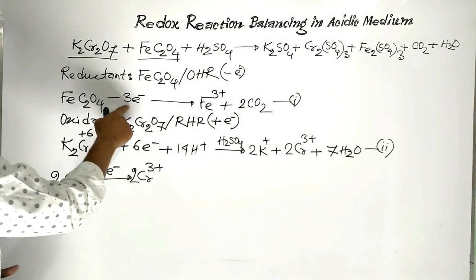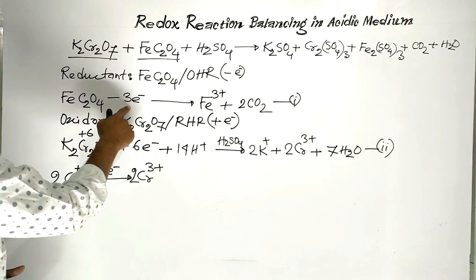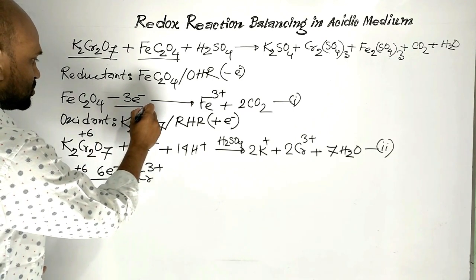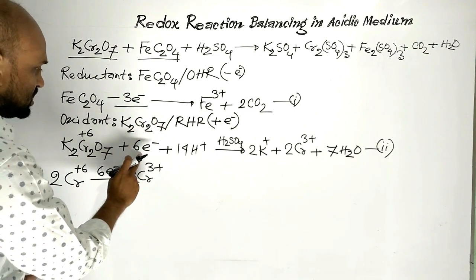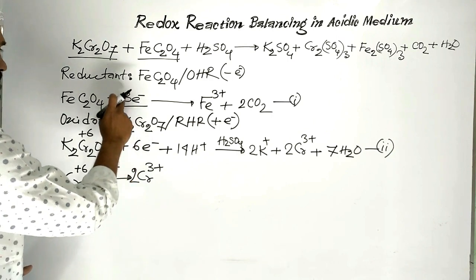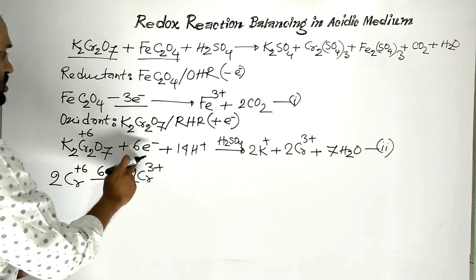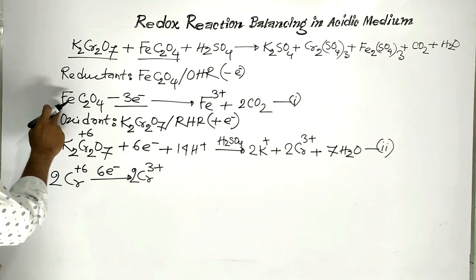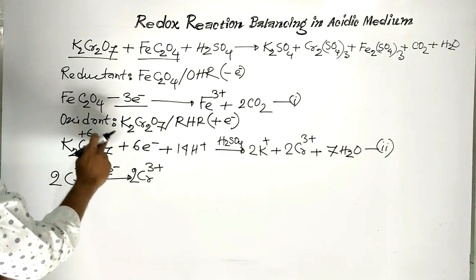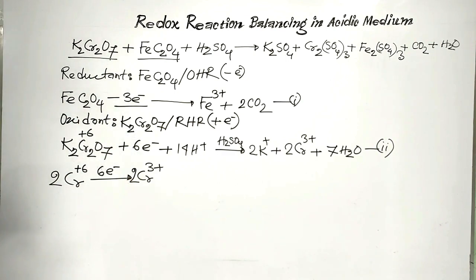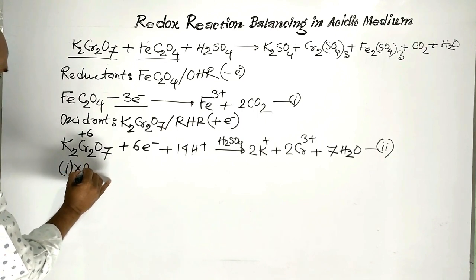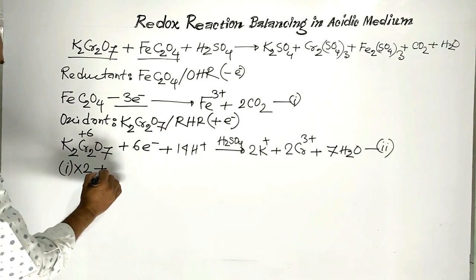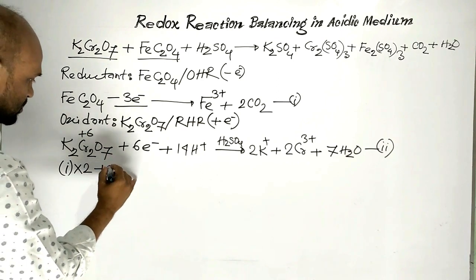We see that in Equation one there are three electrons, and in Equation two there are six electrons. To equalize this number of electrons, Equation one is multiplied by two and then added to Equation two.